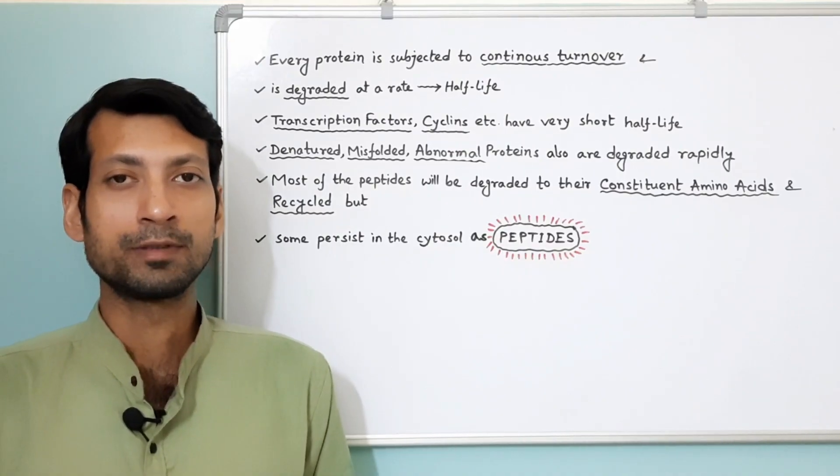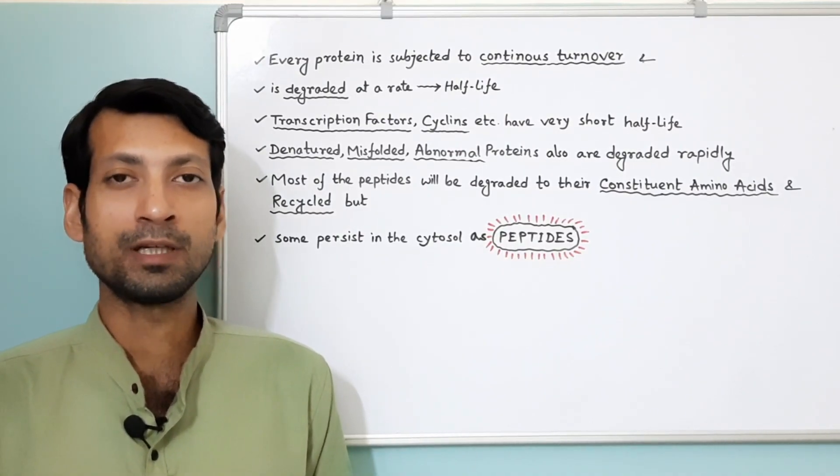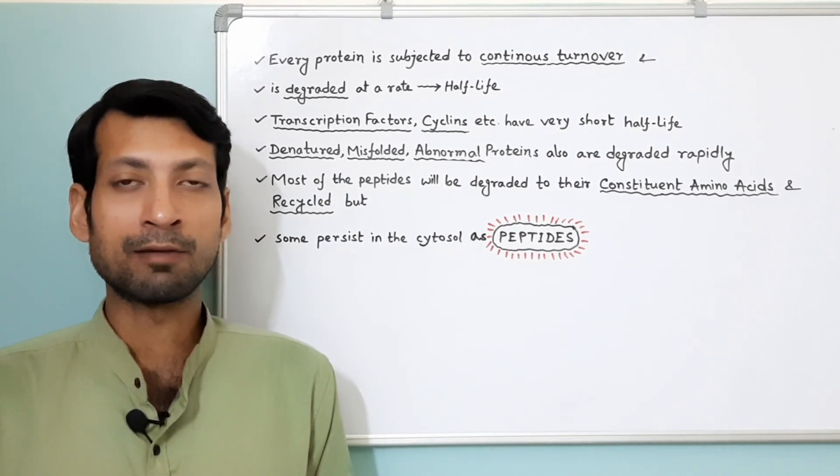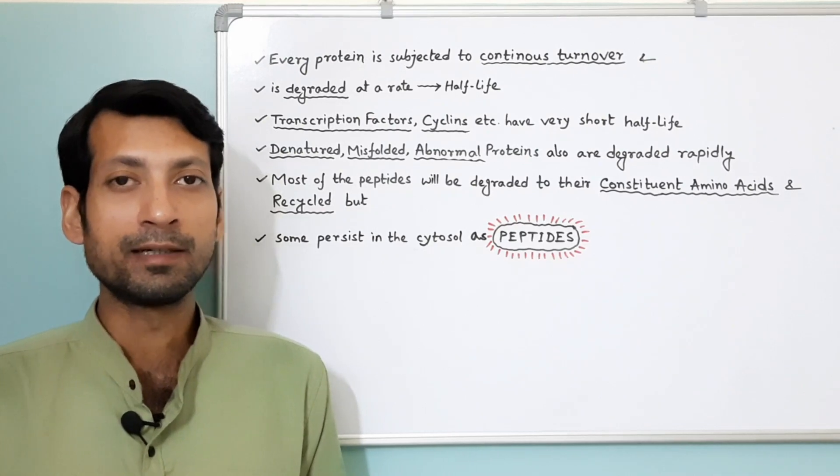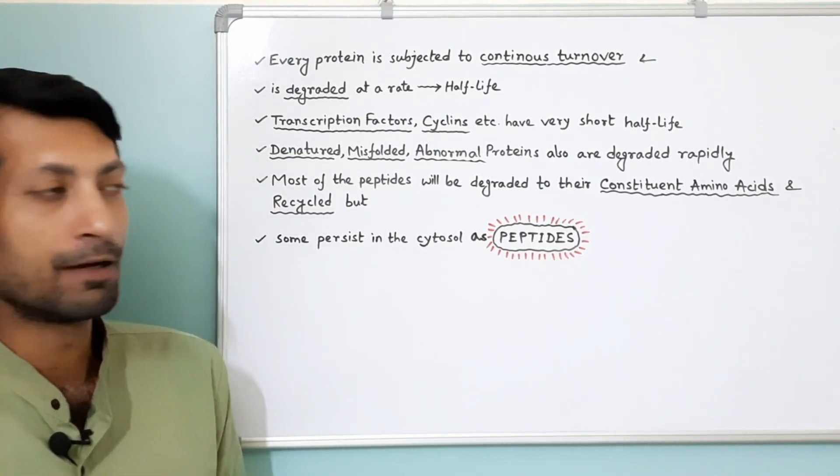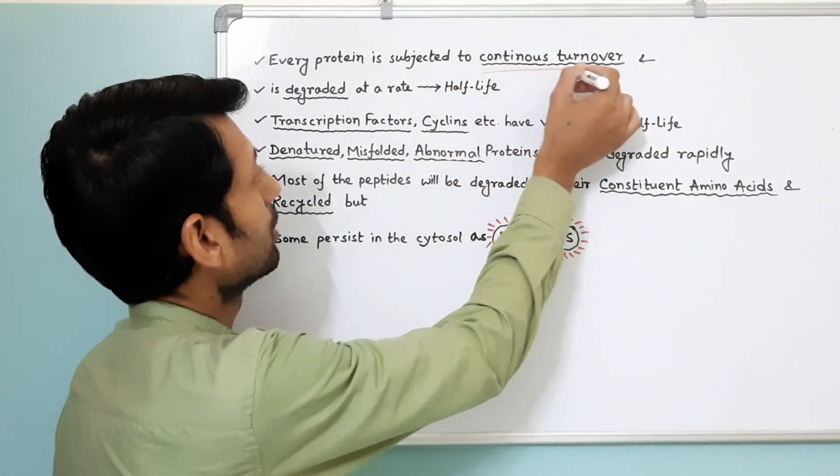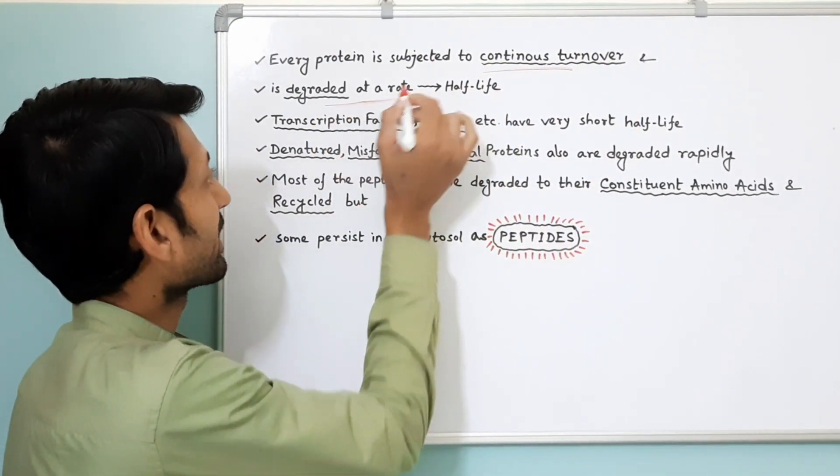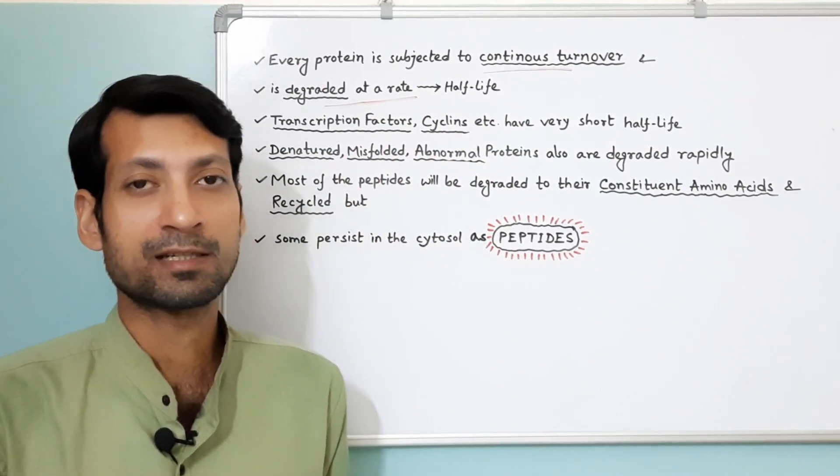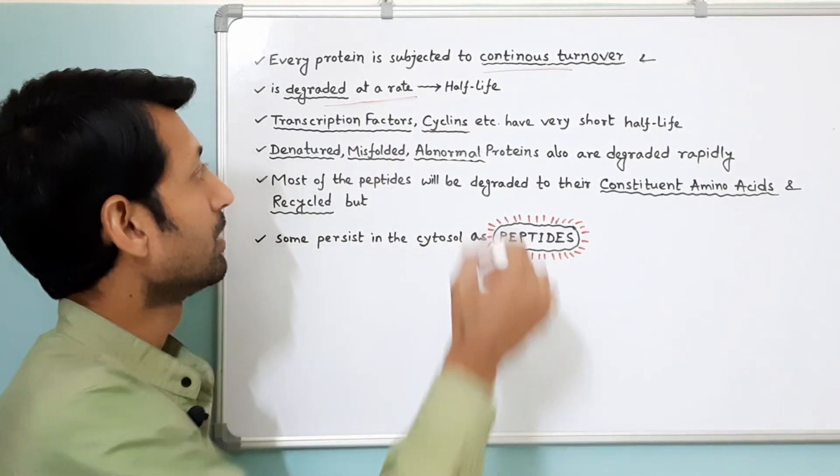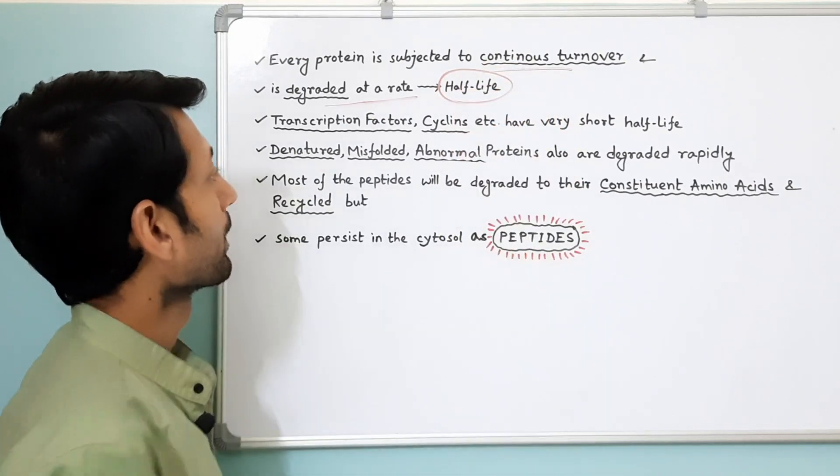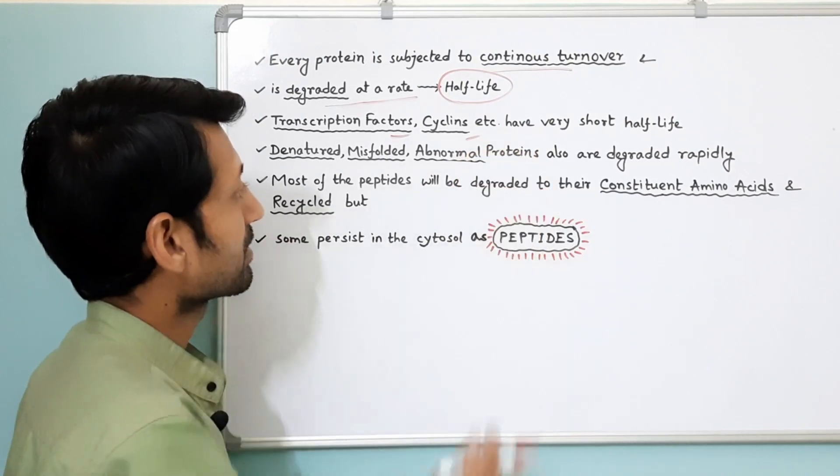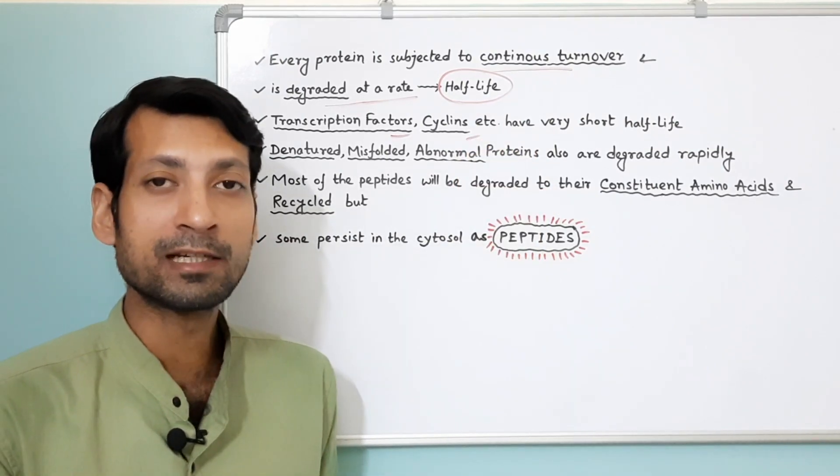Now the question comes, why is the endogenous pathway required? In eukaryotic cells, the protein levels are carefully regulated. Every protein is subjected to continuous turnover and is degraded at a rate which is generally expressed in terms of its half-life. Some proteins, for example transcription factors, cyclins, have very short half-life.